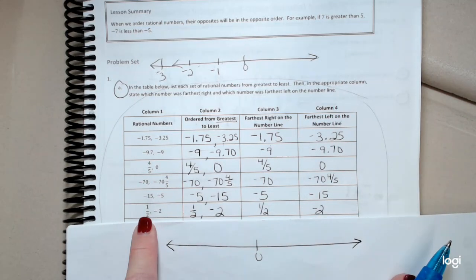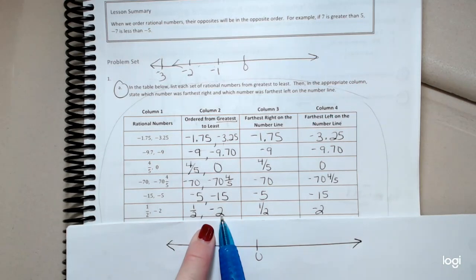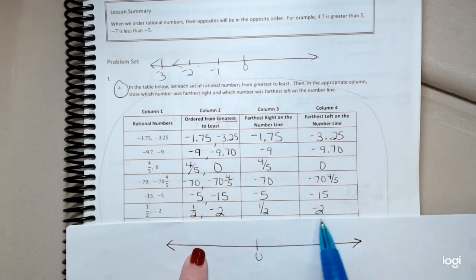One-half and negative two. Well, obviously, positive numbers are larger than negative numbers. So it's going to be on the right side of the number line.